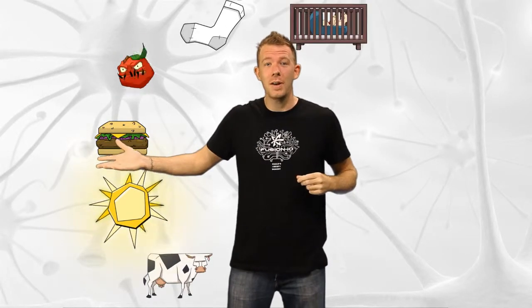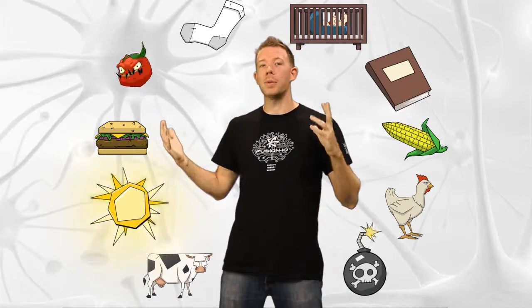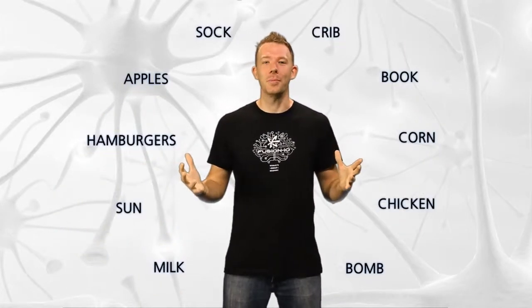So our story goes. I milk a cow by pumping its tail. And then the sun comes out and cooks the cow until it bursts into hamburgers. Clouds cover the sun and it starts raining apples. Angry apples. Then I throw a disgusting sock into a baby's crib. The baby hits me on the back of the head with a book, which lands on the floor. Corn grows out of it. The chicken walks out and starts eating the corn, chew it away, then a bomb blows up the chicken. Unforgettable.